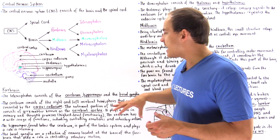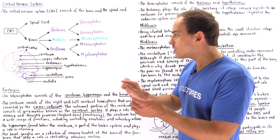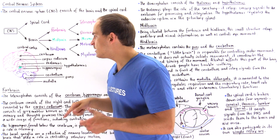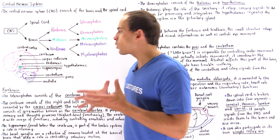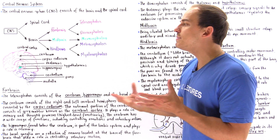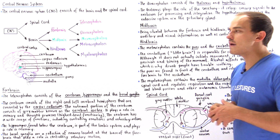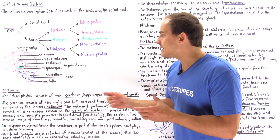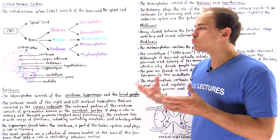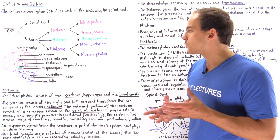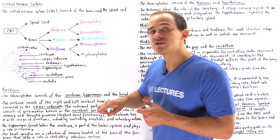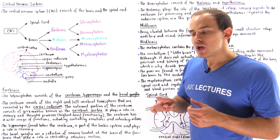The hippocampus is a structure that plays a role in the limbic system of our body. The hippocampus plays a role in memory.